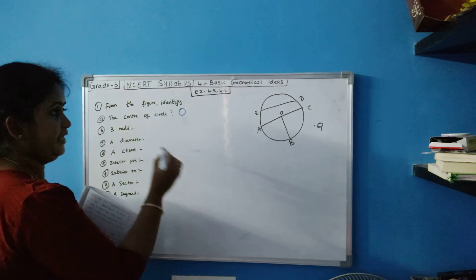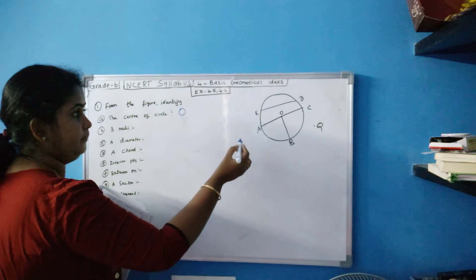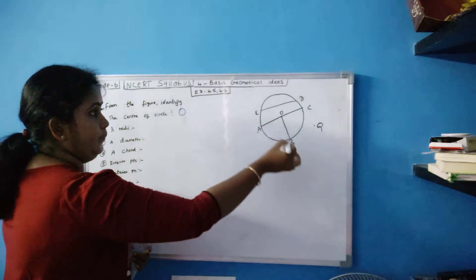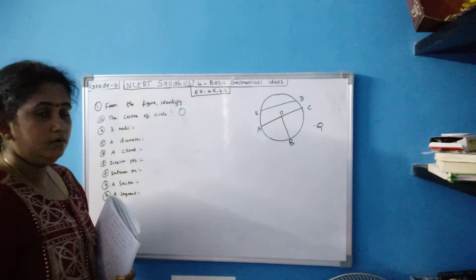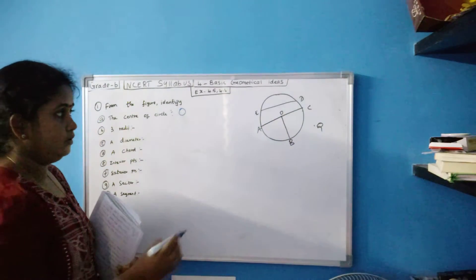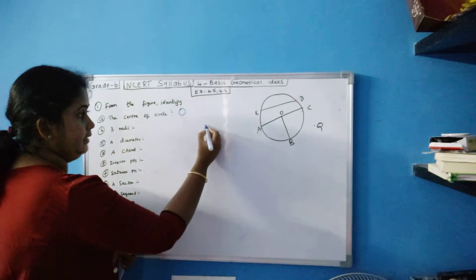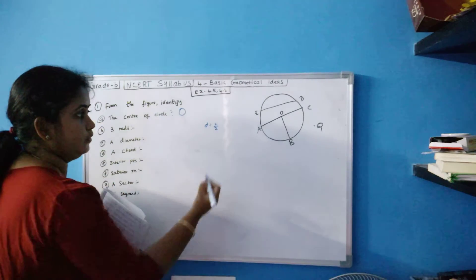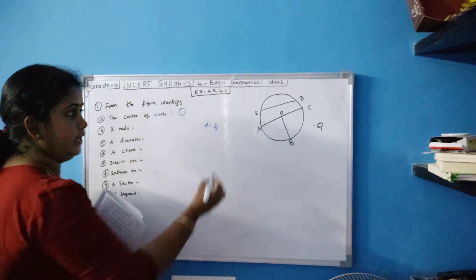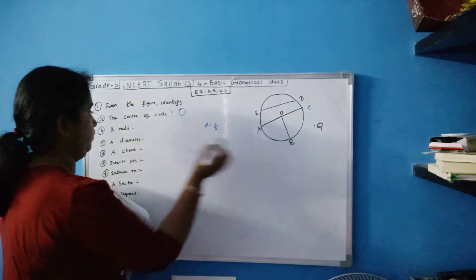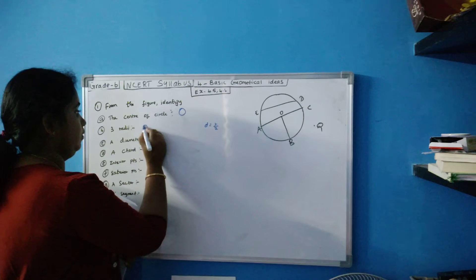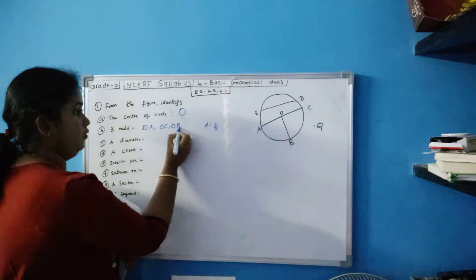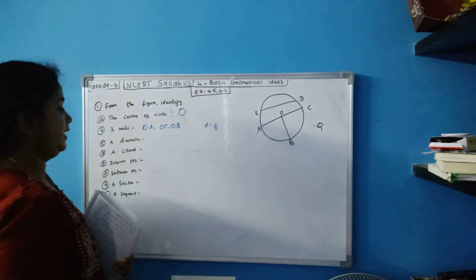Next, three radii. The three radii are OA, OB, and OC. You know diameter equals radius times 2. So radii are OA, OC, and OB — those are the three radii.